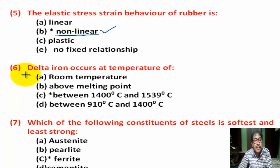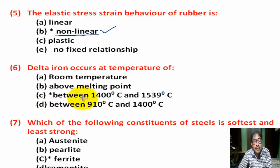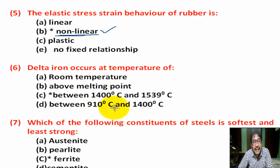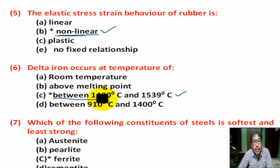Question number 6: Delta iron occurs at a temperature of — Option A: room temperature. Option B: above melting point. Option C: between 1400°C and 1539°C. Option D: between 910°C and 1400°C. Correct answer is Option C — between 1400°C and 1539°C.